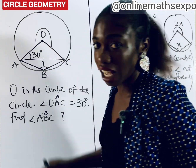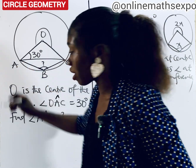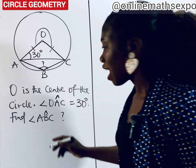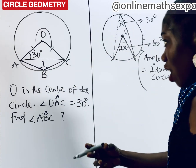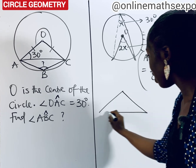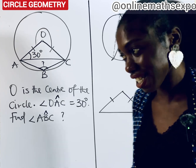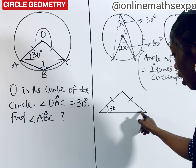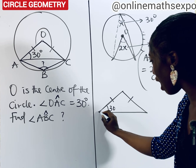Going back to the problem, we need to find angle ABC. To do that, we need to get the reflex angle here, which will help us apply the rule. Now observe that from the center to the circumference we call it the radius — so OA is a radius and OC is also a radius. That means triangle OAC is being formed, and what type of triangle is it? It is isosceles.